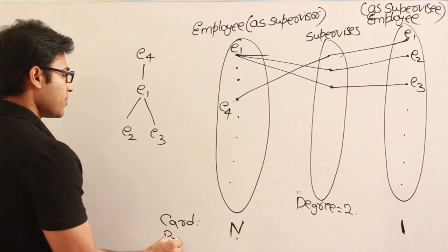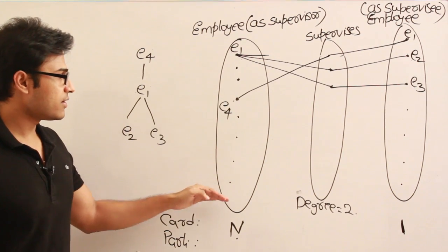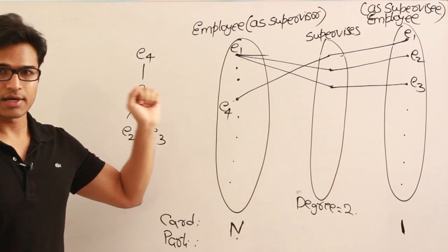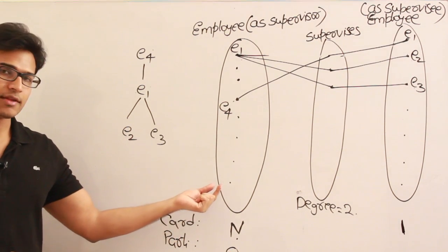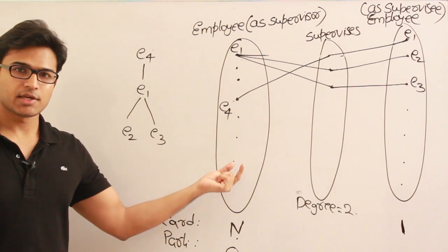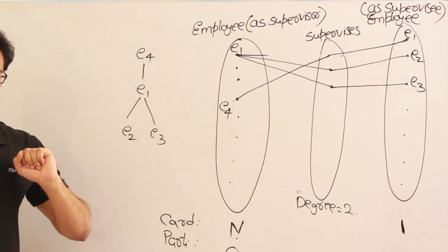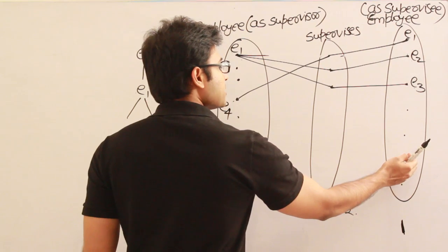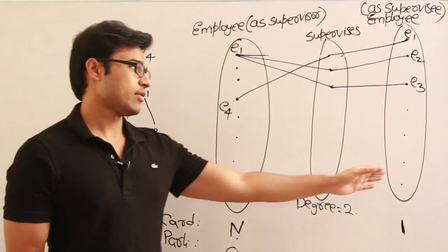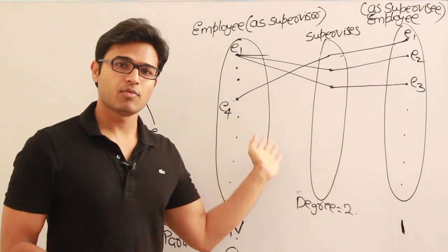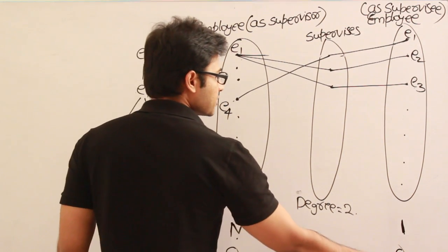Now participation indicates the minimum number of relationships an entity can participate in. As a supervisor: is it always guaranteed that every employee has to act as a supervisor? No — therefore the minimum participation from the supervisor side can be zero. This means an employee might never supervise anyone — they could be a bottom-level employee. On the supervisee side: it is also not always necessary that every employee has a boss, because a CEO is also an employee with no supervisor. So participation here is partial on both sides.